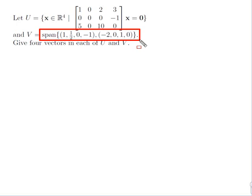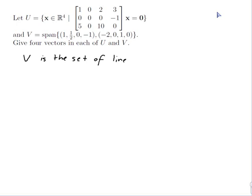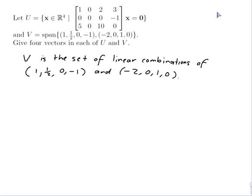V looks like the best place to start because the definition tells me how to make vectors — V is the set of linear combinations of (1, 1/2, 0, -1) and (-2, 0, 1, 0). So all I need to do is write down some linear combinations of those vectors to produce vectors in V.